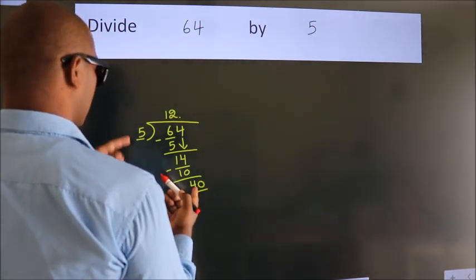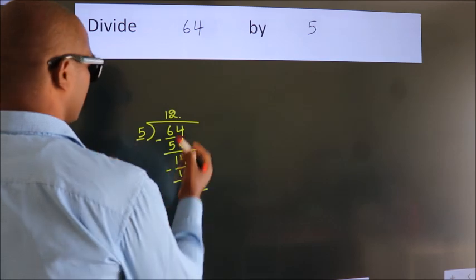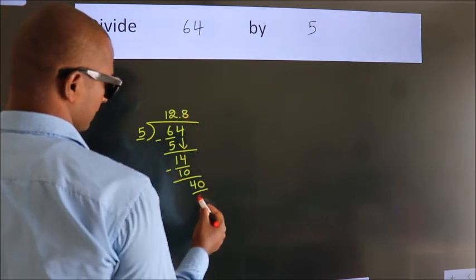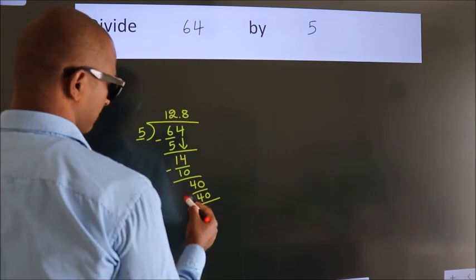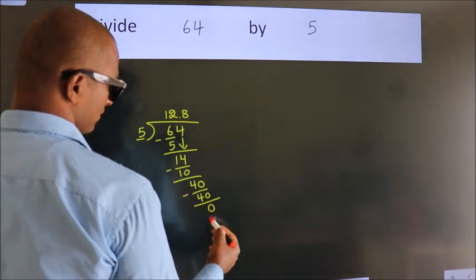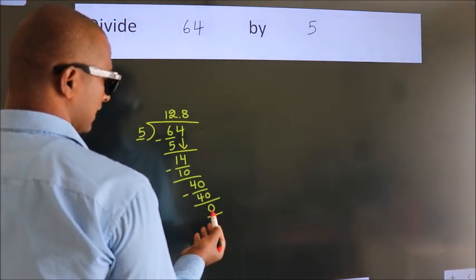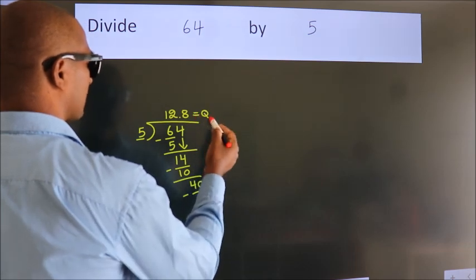When do we get 40? In 5 table. 5 times 8 is 40. Now, we subtract. We get 0. We got remainder 0. So this is our quotient.